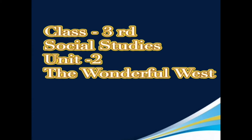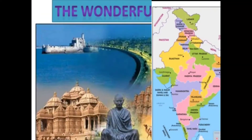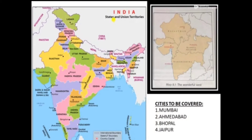Listening to the Wonderful West. In our previous class we studied about the colorful north. Today we will learn about the wonderful west. This is our India map, and today we will discuss the wonderful west side. Cities to be covered in the west are Mumbai, Ahmedabad, Bhopal, and Jaipur. Today we will discuss Mumbai.